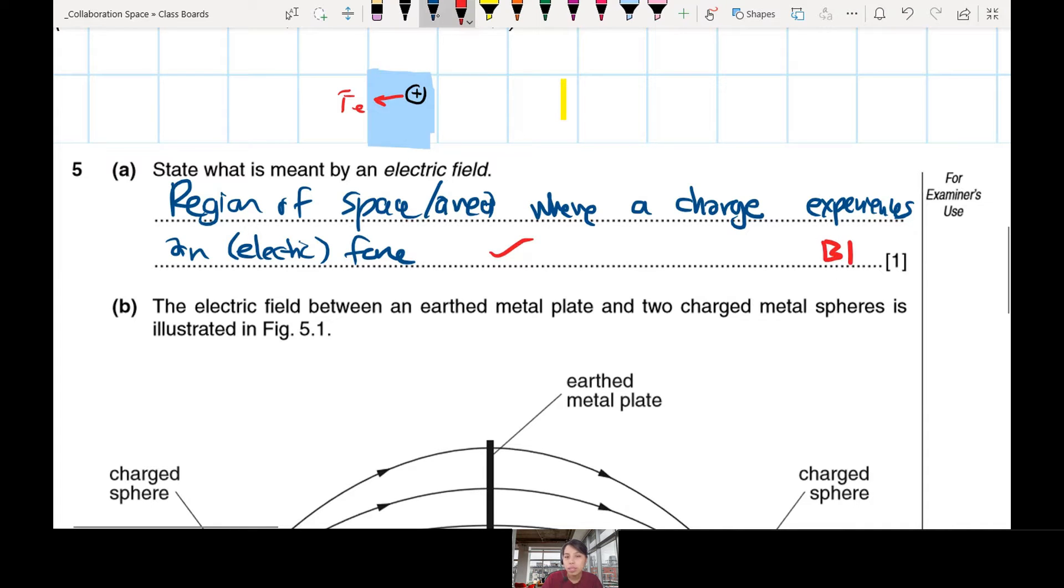Some of you may say miss, what about the equation F equals QE and then E equals force per unit charge? What is this one? This is actually talking about defining electric field strength, how strong is the field. Then you calculate force per unit charge. It's a different definition. This one is just electric field, didn't ask about the strength, just electric field. So region of space where there's electrostatic force.